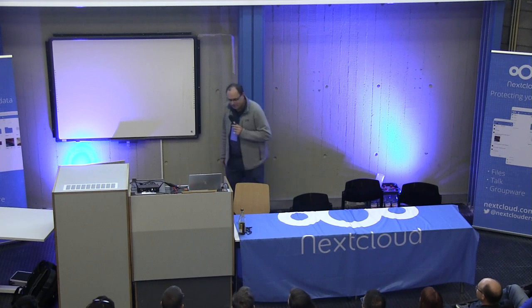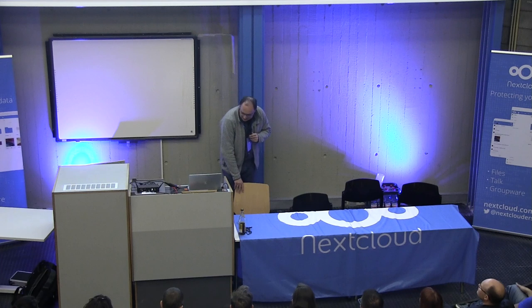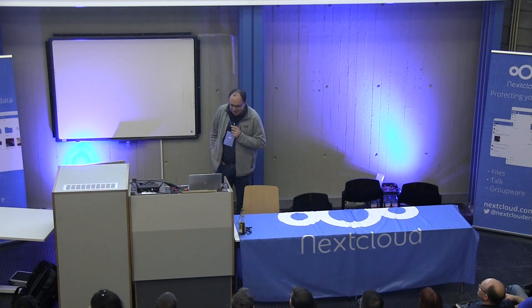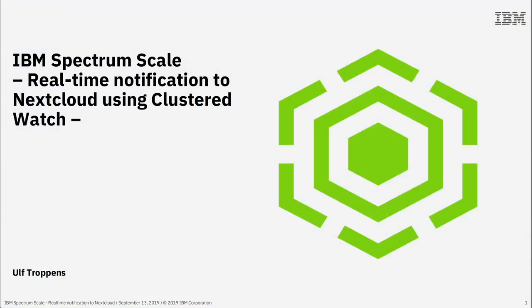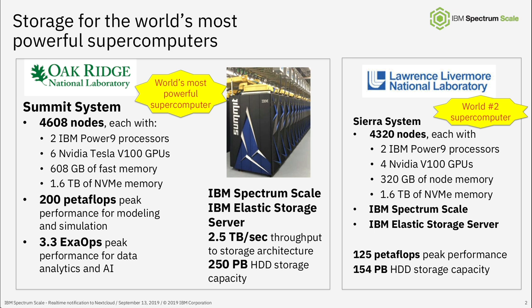I'm Ulf. I talked this morning about the integration, and now some more details. I have about 10 charts — the first six or seven give some foundation about our product to understand how Nextcloud fits into it. Our heritage is supercomputers. The largest system we deployed is 250 petabytes, about 25 racks with storage and hundreds of thousands of nodes where the file system is mounted. You can think of Spectrum Scale as a file system overspanning all these nodes, with an agent running on each node for very fast access, similar to NFS but super fast.